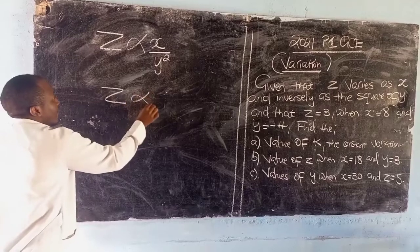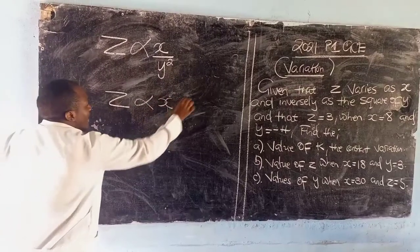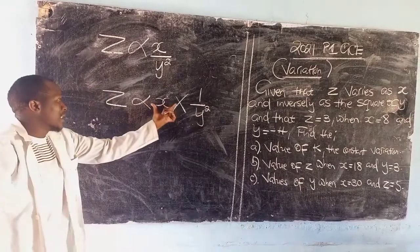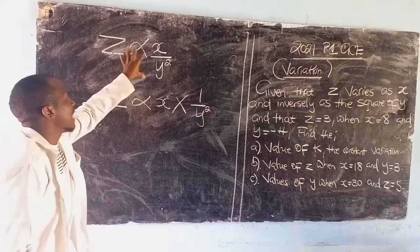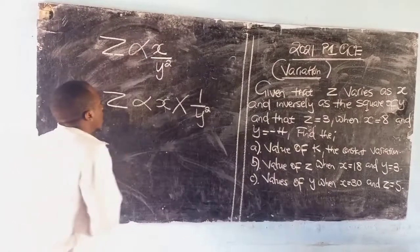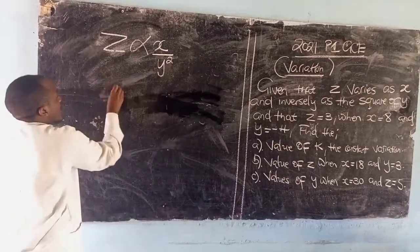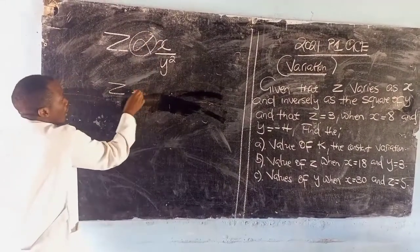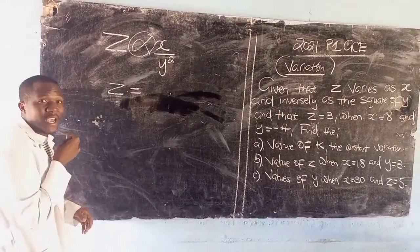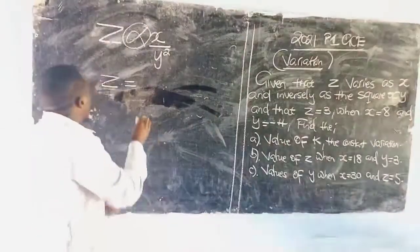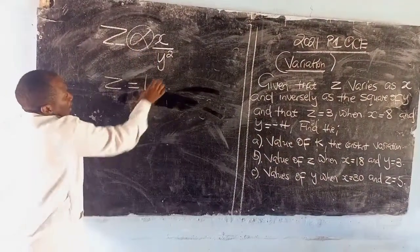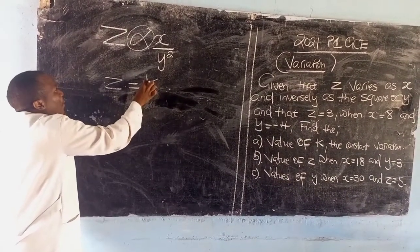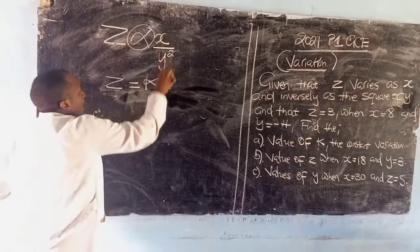This is also the same as z varies directly as x and inversely as the square of y. We can either put it in this way or in that direction. We are now going to say z is proportional to x. Where there is the variation symbol, we are now going to replace with an equal sign to make it an equation, then we are going to replace with k.